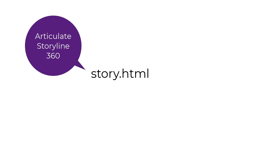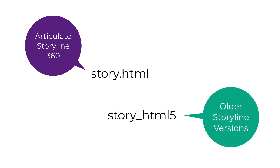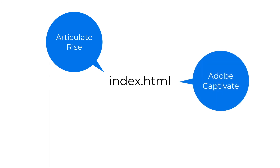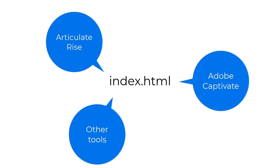If you're using Storyline 360, look for the file called story.html to create your public link. For older versions of Storyline, the file name might be story.html5. The file name will be different when you publish e-learning or interactive video with other tools — most of the time the file you'll use to generate the public link will be called index.html. This is true if you're publishing in Articulate Rise, Adobe Captivate, or a number of other tools. Other than that, the procedure is exactly the same.